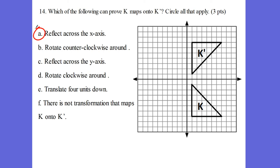Now, can I rotate it counterclockwise to get that? If I rotate it counterclockwise, will it put my image exactly like this? No, it will not. Will it reflect across the y-axis and get the same thing? No — here's the y-axis, that would put me over here, so that's a no. Can I rotate it clockwise to get the exact same shape? No. If I rotate it this way, then this way, it's not going to be the same shape. You can check with your patty paper — draw it, sketch it, and rotate it. Translate four units down? No — that's a slide, that's a no.